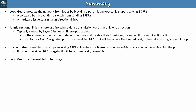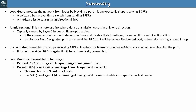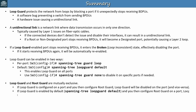There are two ways to configure Loop Guard: per port with 'spanning tree guard loop' in interface config mode, or by default with 'spanning tree loop guard default' in global config mode — this enables it on all ports, but you can use 'spanning tree guard none' to disable it on specific ports if needed. Loop Guard and Root Guard are mutually exclusive — they can't be active on the same port at the same time. If Loop Guard is configured on a port and you configure Root Guard, Loop Guard will be disabled, and vice versa. Only one can be active at a time on each port.